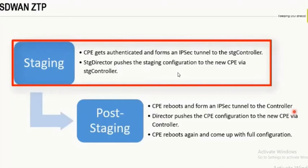The branch runs a ZTP script that tells it the controller's public or private IP — where it should go to verify whether it is a valid CPE. As soon as this information is fed, within 10 to 15 seconds the CPE tries to reach the controller's IP and build an IPsec. Once the IPsec is built, it captures parameters like the branch's serial number and IP address. The controller receives this information and relays it to the Director.